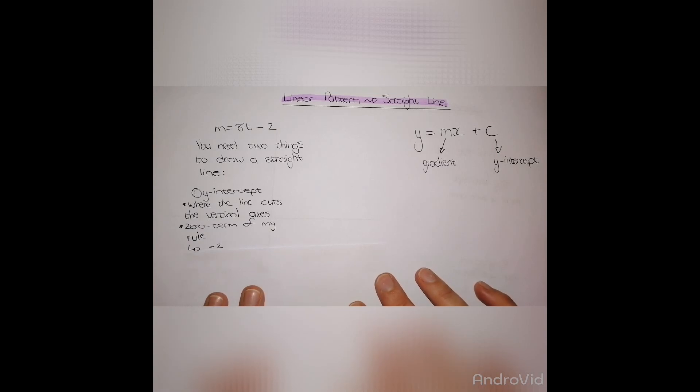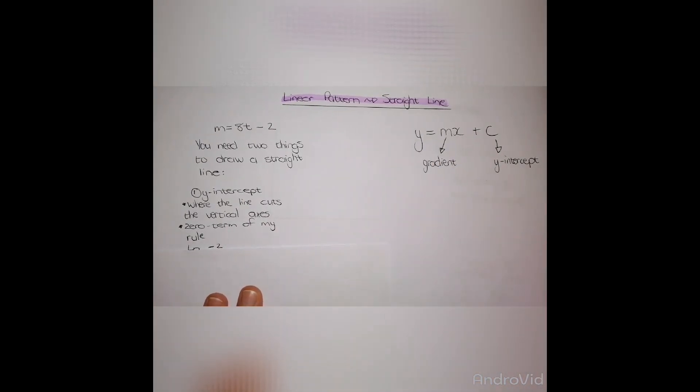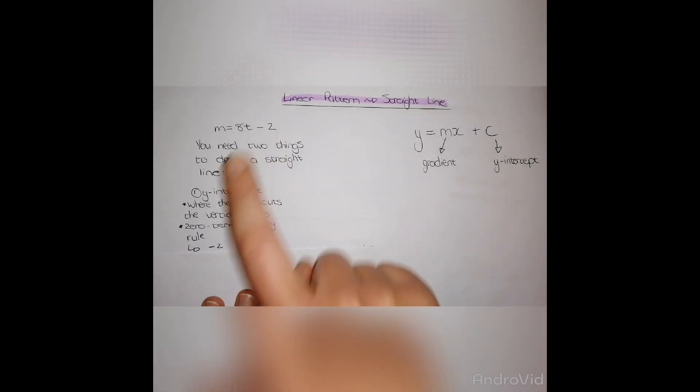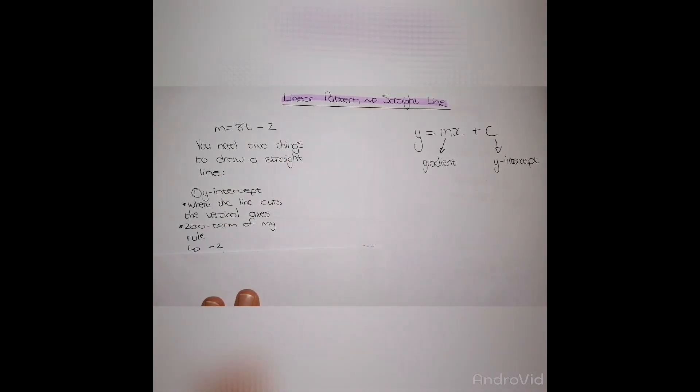My y-intercept is where the line cuts my vertical axis of my axis set. In a linear pattern, my y-intercept is my zero term that I found using the table.